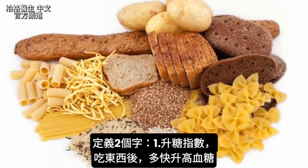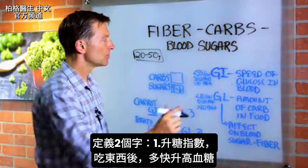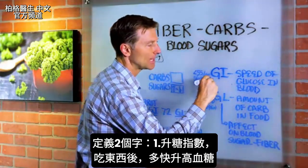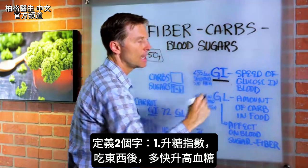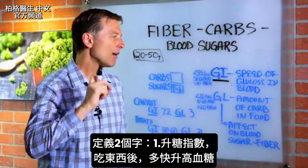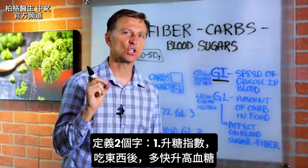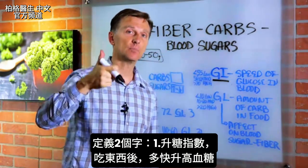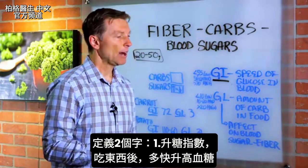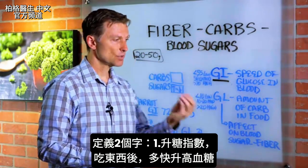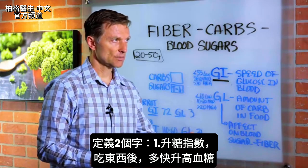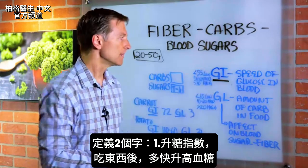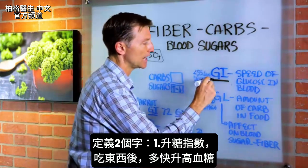So there are two definitions that I want to define. Number one is something called the glycemic index. That is how fast the glucose is spiked in the blood — how fast you're going to consume a food and it's going to raise the blood sugar. That's glycemic index.